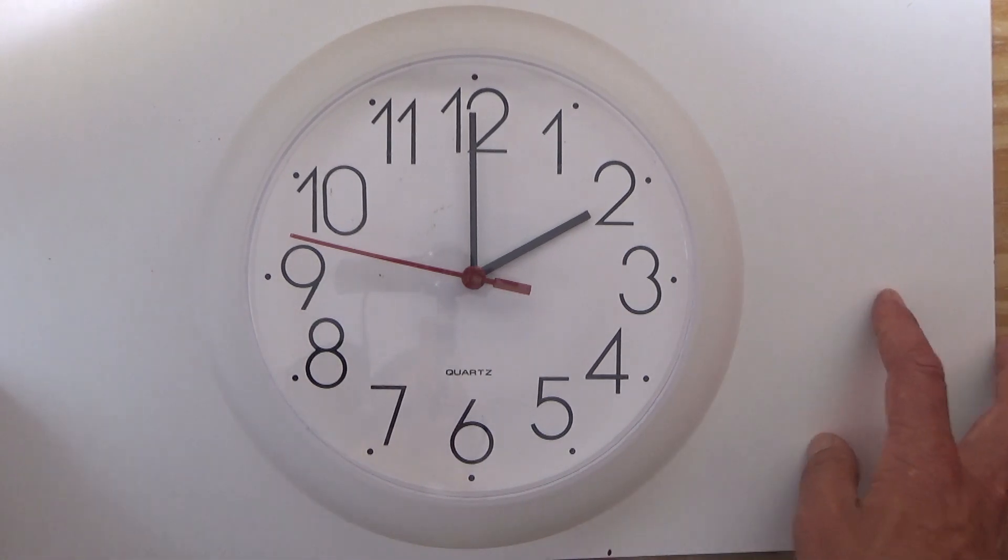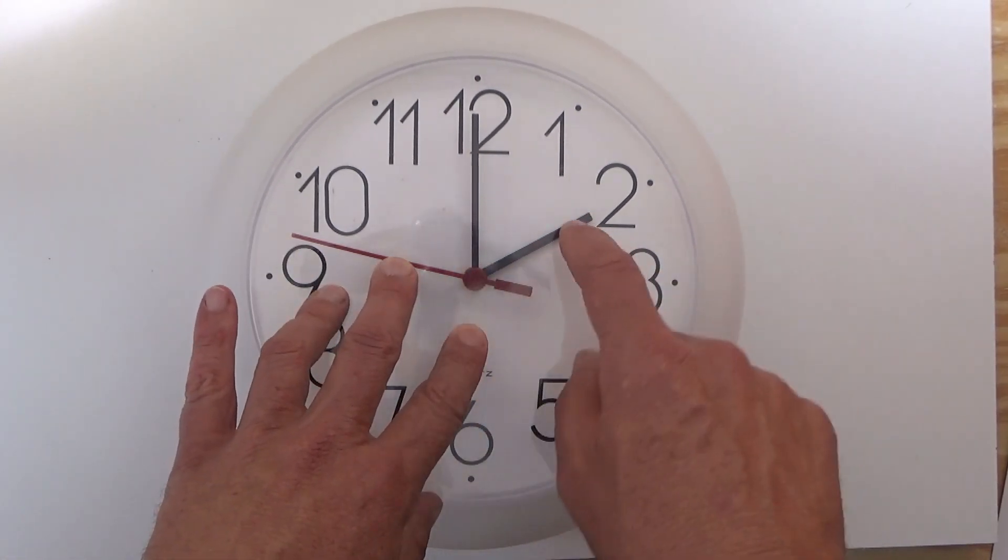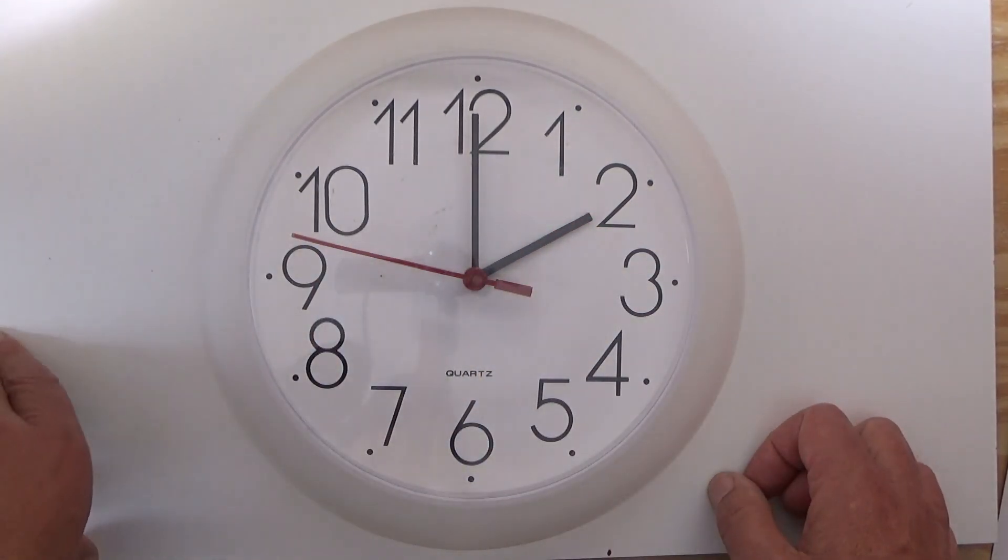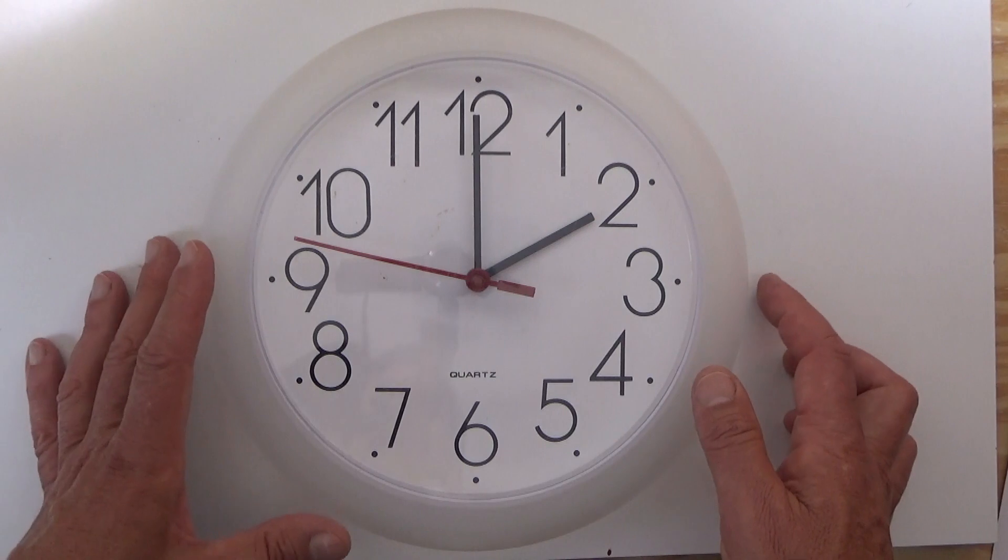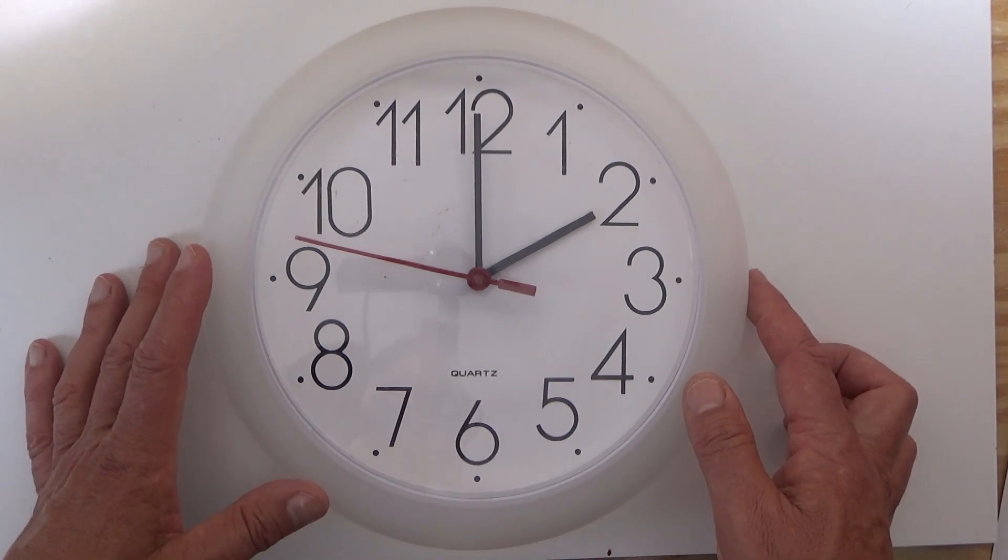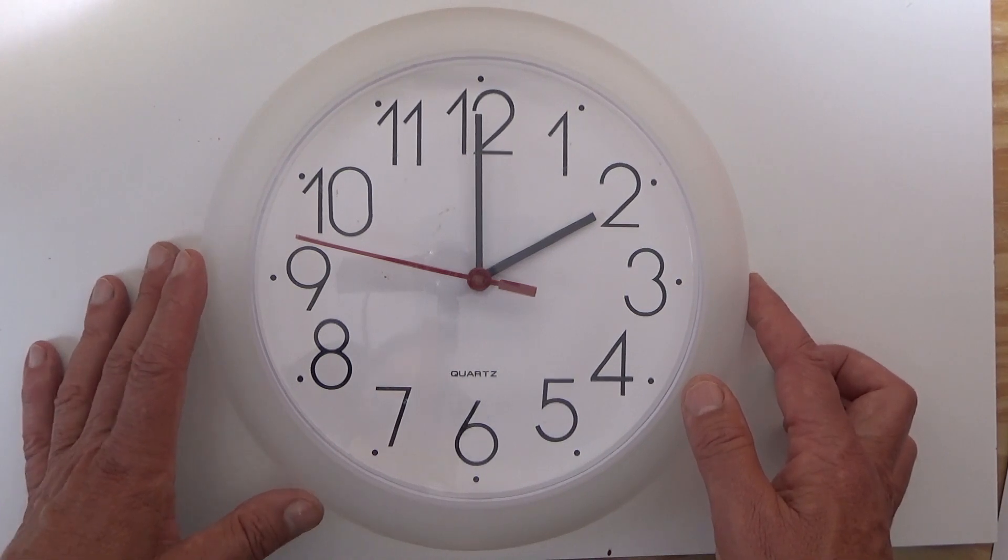The obvious answer is that the hands on a clock are at 60 degrees twice every hour. There's 24 hours in a day, so that means they must be at 60 degrees 48 times in a 24-hour day. But unfortunately, 48 times is incorrect.